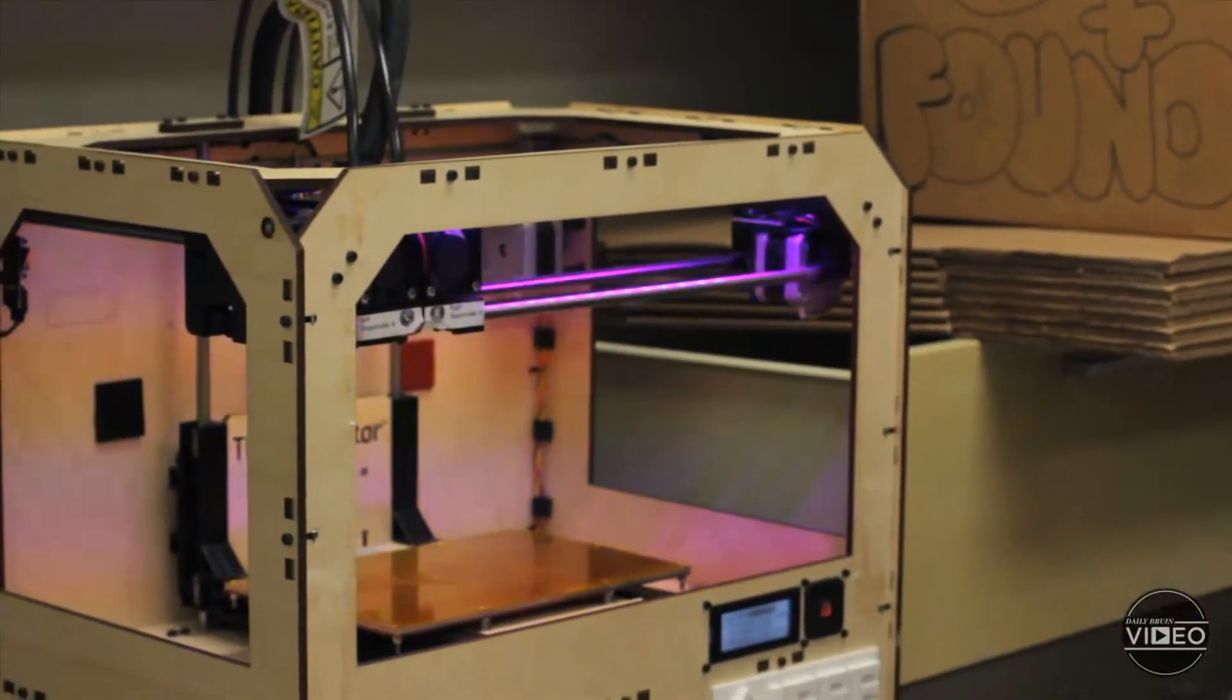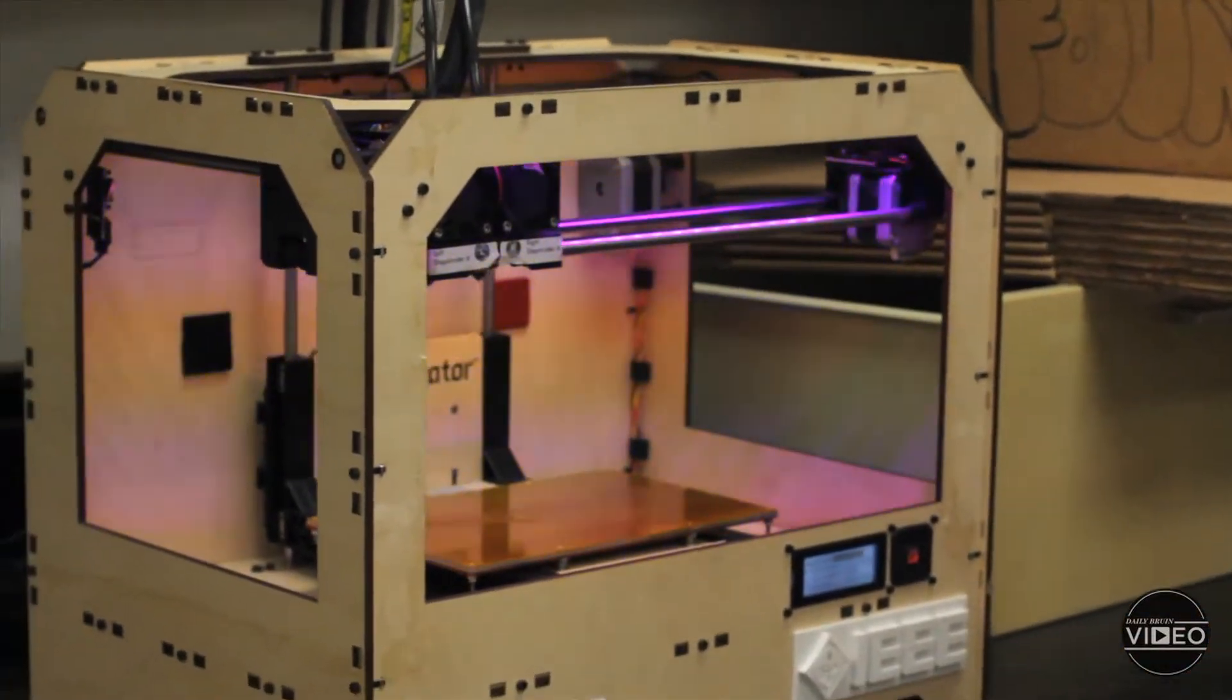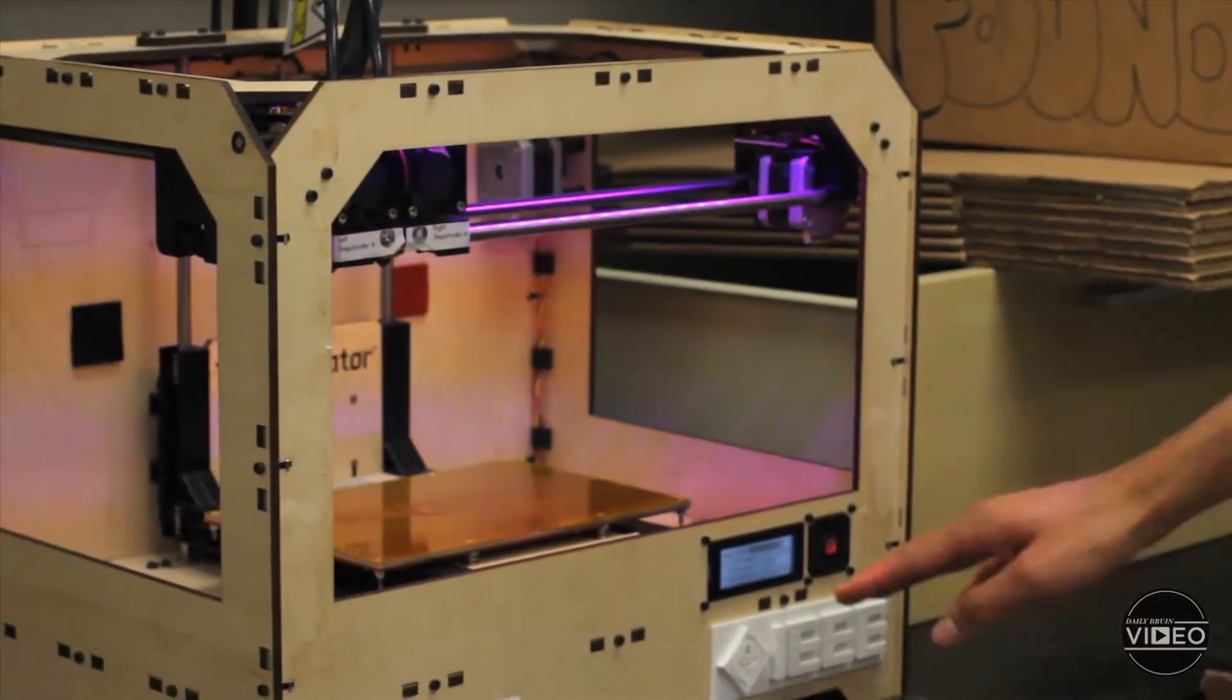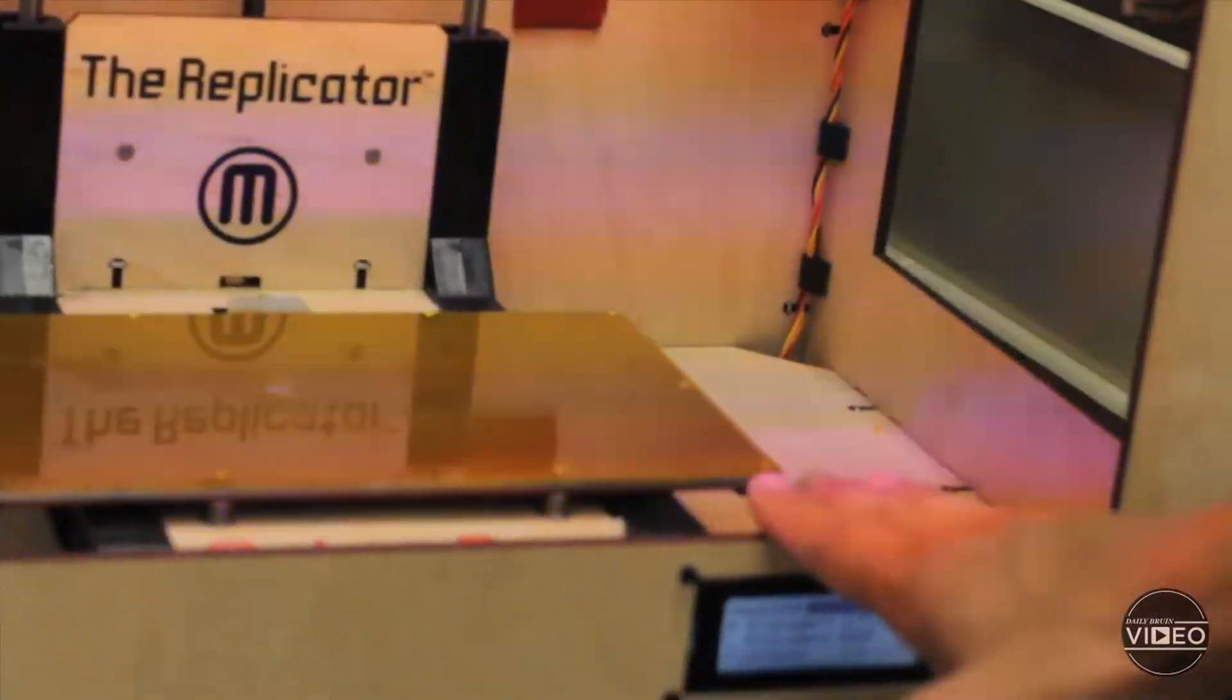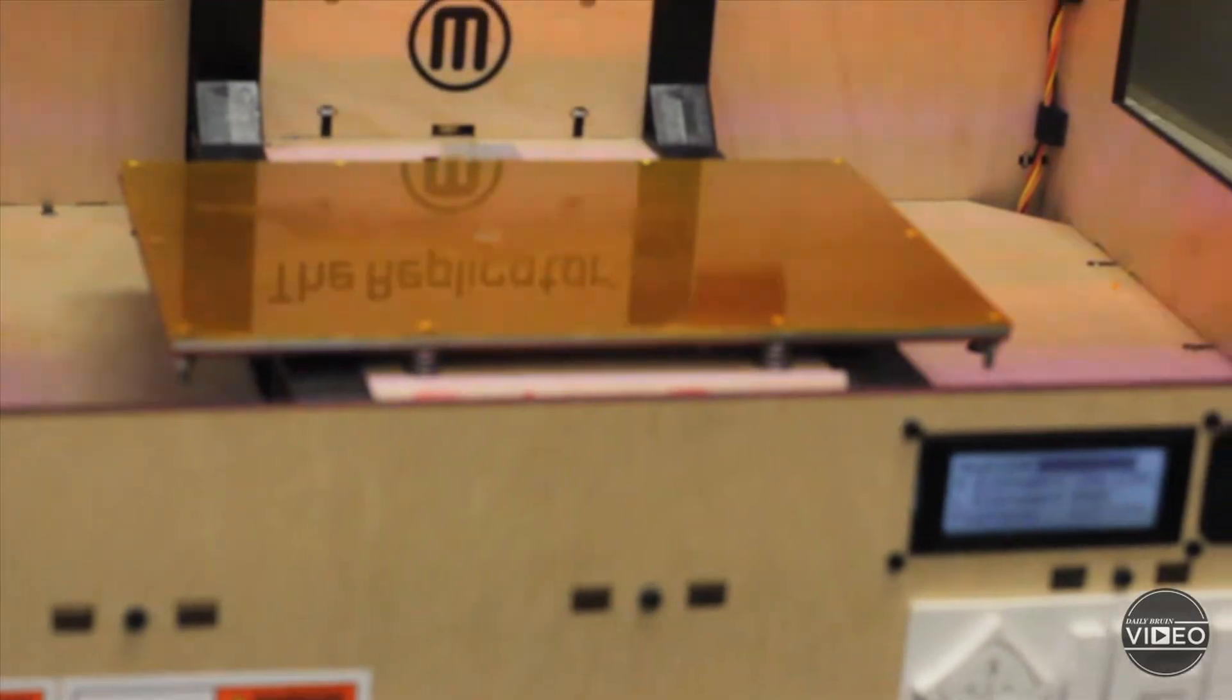The 3D printer is made up of a lot of different moving parts, but you can really simplify it into just a few. First will be the build plate, which is a heated metal plate on the bottom that all parts are built onto.